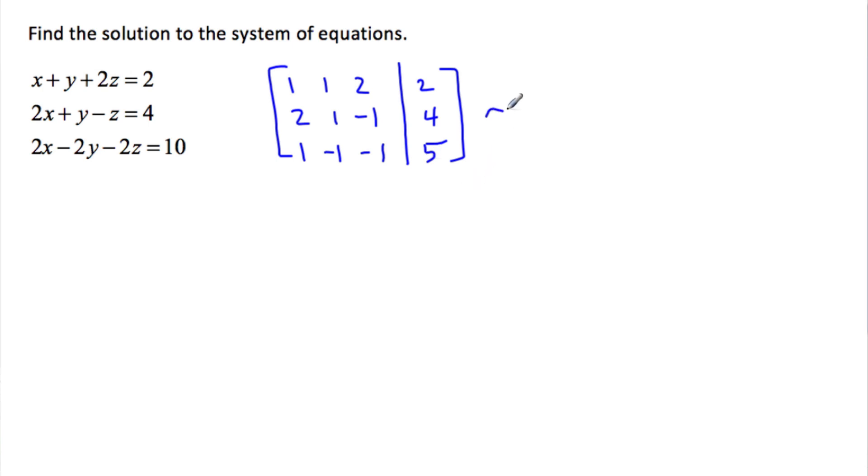Now I'm going to rewrite the first row and then I'm going to get rid of this value here by multiplying the first row by a negative. So negative 1 plus 1 is 0. Negative 1 minus 1 is minus 2. Negative 2 minus 1 is minus 3. Negative 2 plus 5 is 3.